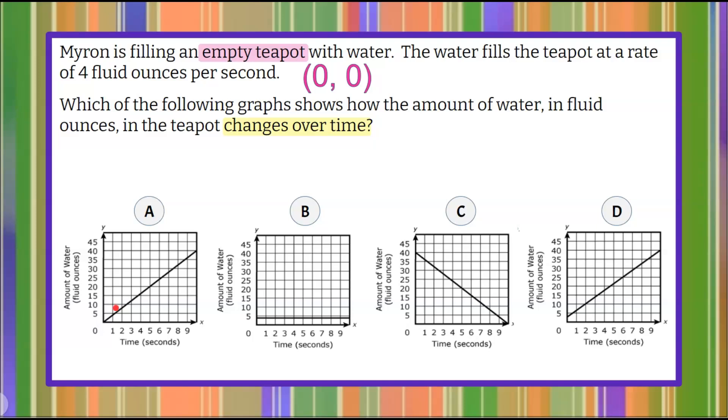So when I look at graph A and I plot a point at the origin, that is where this line begins. So it could possibly be graph A.